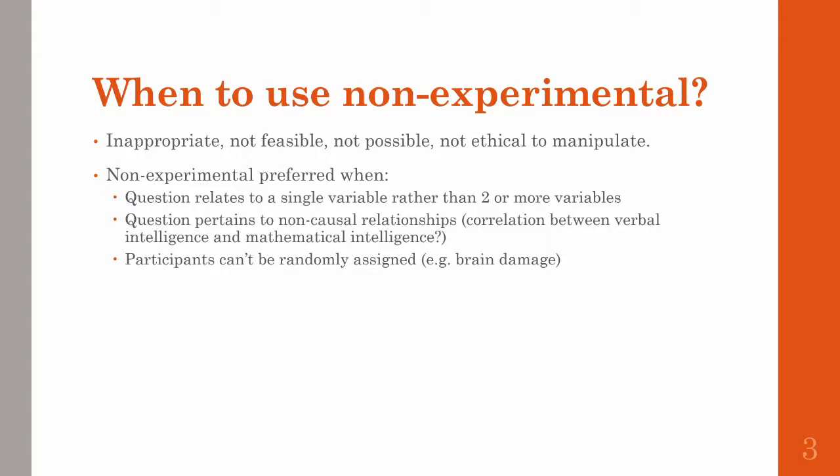You also use non-experimental research when you can't randomly assign participants to conditions. Say you want to look at what happens when someone has brain damage to their prefrontal cortex — you have to find people that already have that damage. You don't have the power, thankfully, to decide which people will get brain damage.